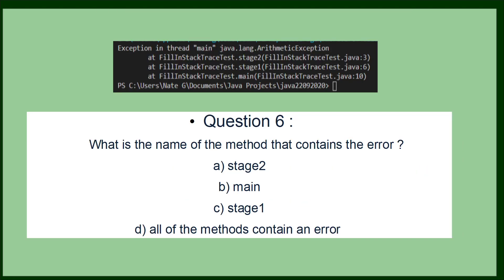Question six is talking about exceptions and how to read that exception stack trace and understand what it means. In this one, you have to find out where the main error is or which method contains the error. Obviously, the error is in stage two, as you can see from the stack trace. If the stack trace is a little bit unfamiliar for you, have a look at that playlist and watch the stack trace video and this answer should become clear.